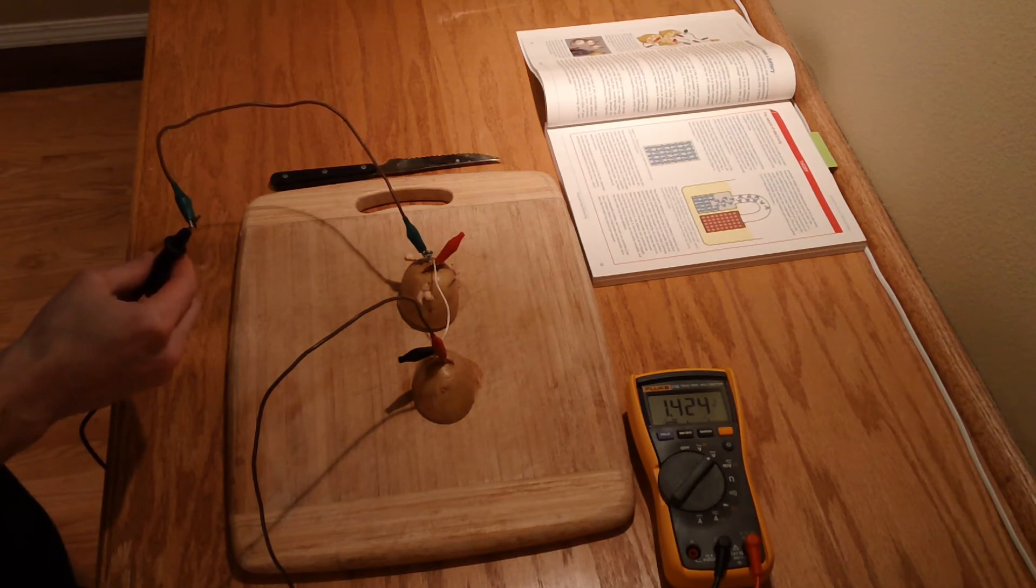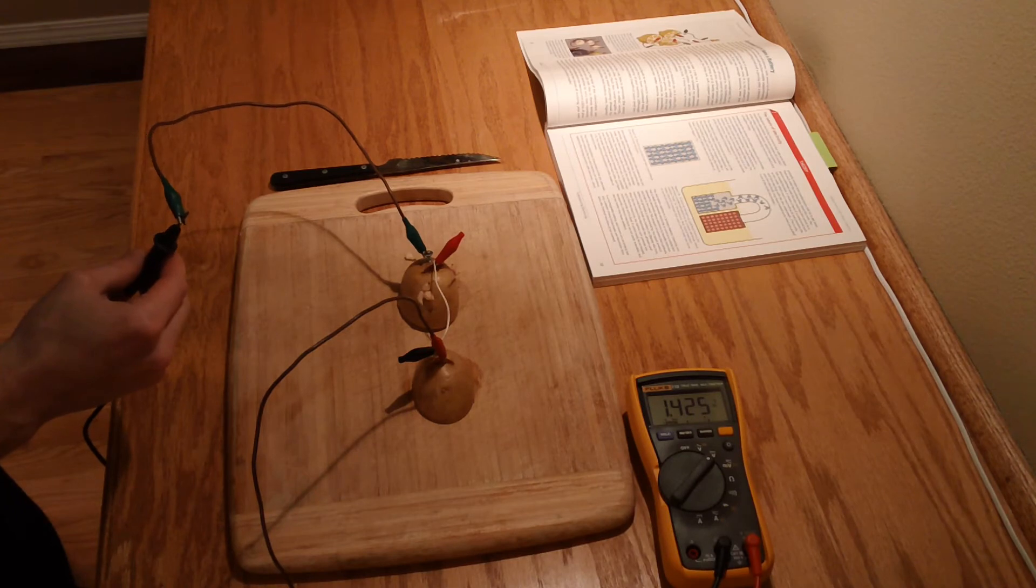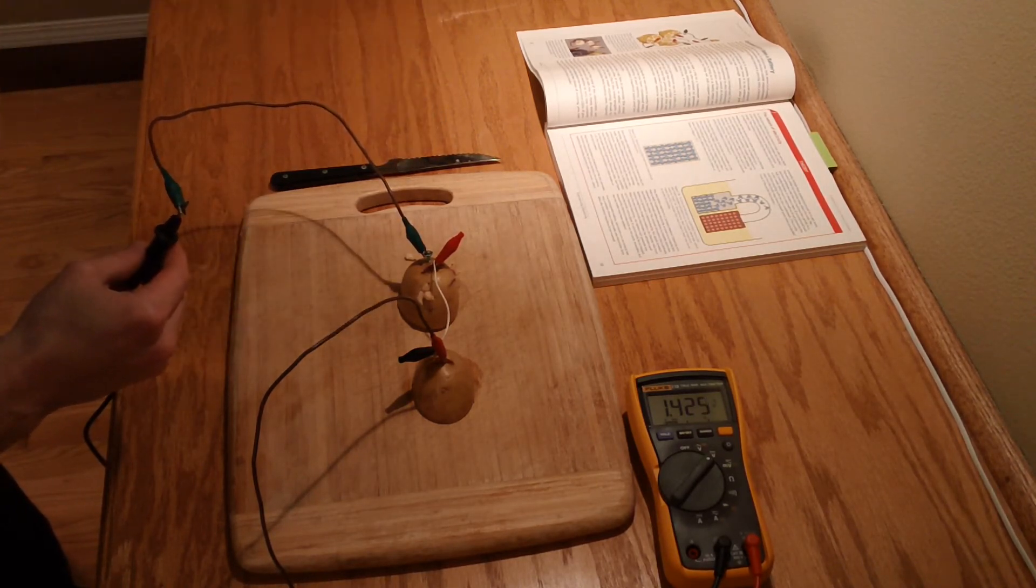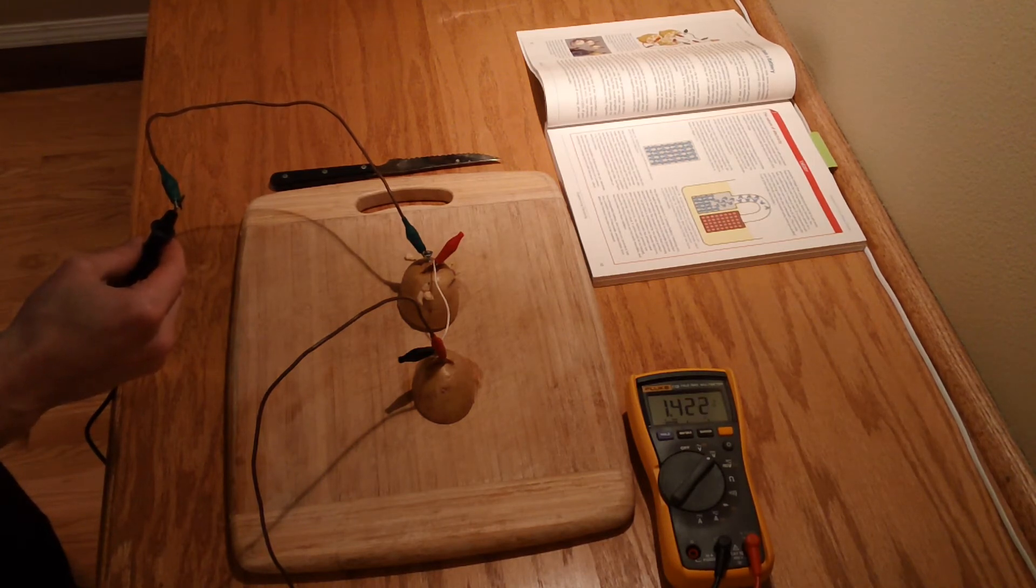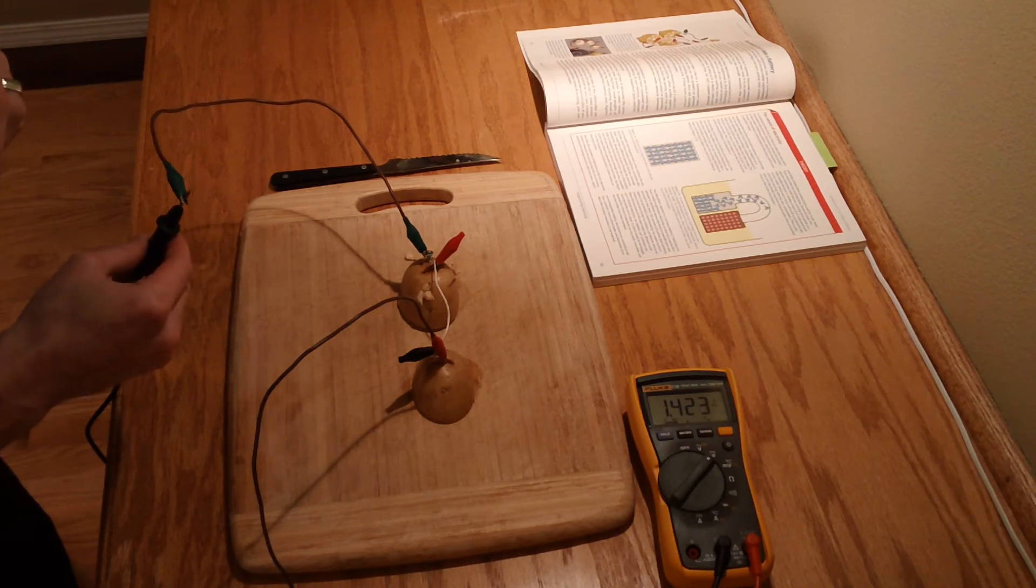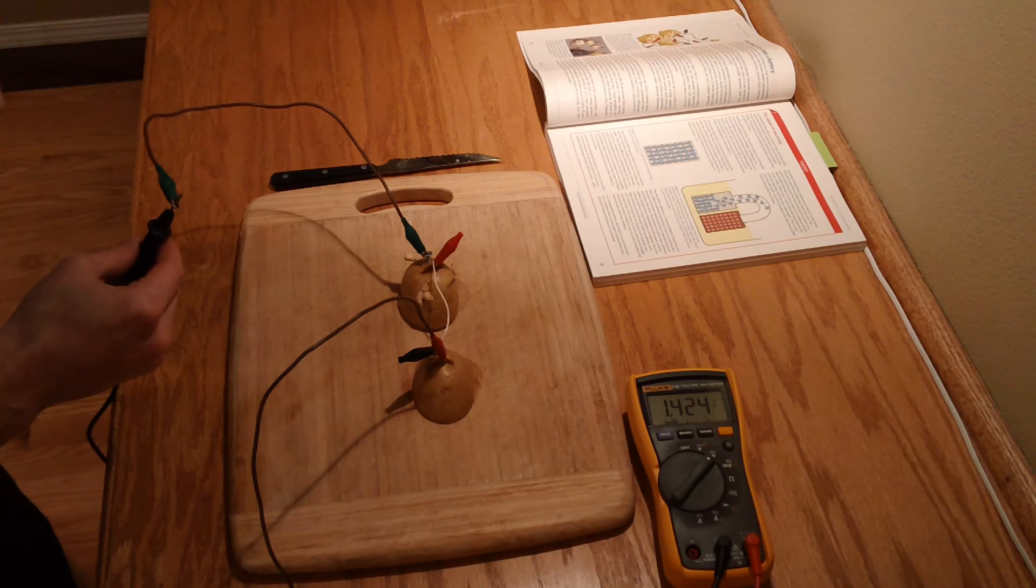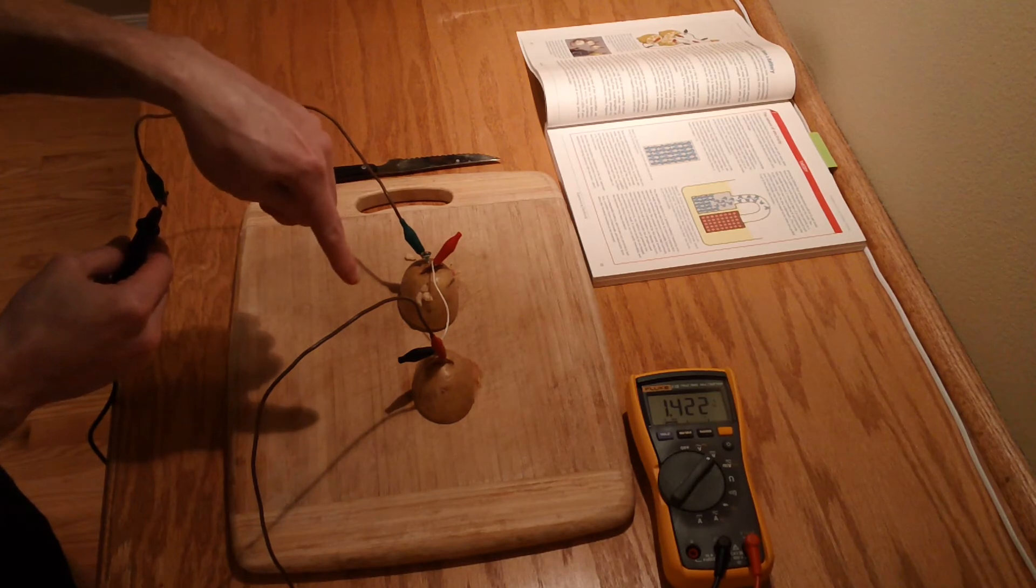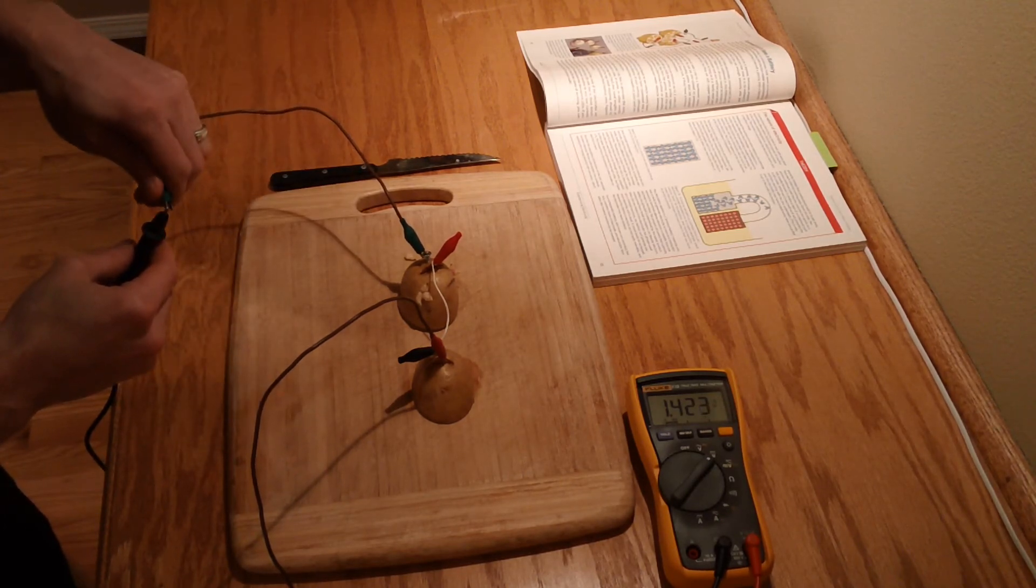So we actually are outputting quite a bit of voltage here. I thought that when we took the reading of just that one potato that we were getting 0.4 volts, about a half, almost half a volt. But now we're getting a pretty steady 1.4 volts. Very interesting. So either the voltage of that potato is more or something else is going on here.